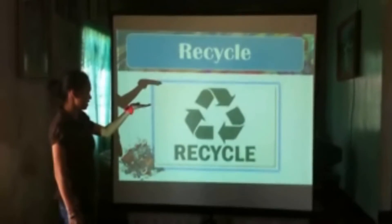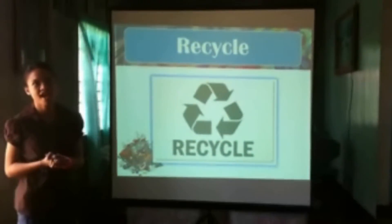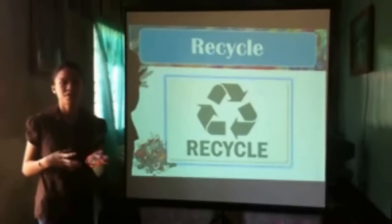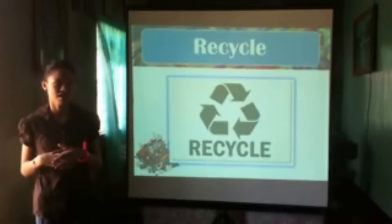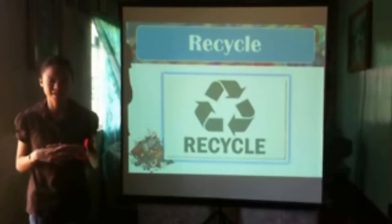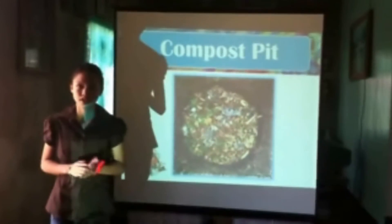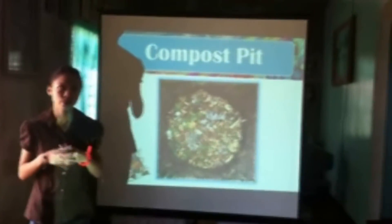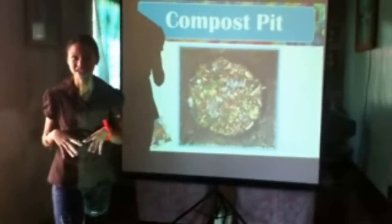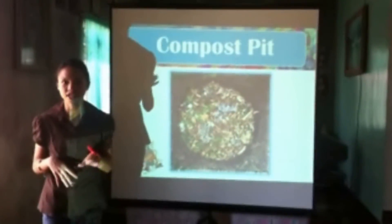We have three arrows representing recycle, reuse, and reduce. This simply helps us reduce the trash from human activity that causes major problems affecting our lives. Next is composting. Composting is one of the simple ways we can do to reduce our trash. We can do it in our backyards — just dig the land and put the trash there. When it decomposes, it acts as fertilizer.